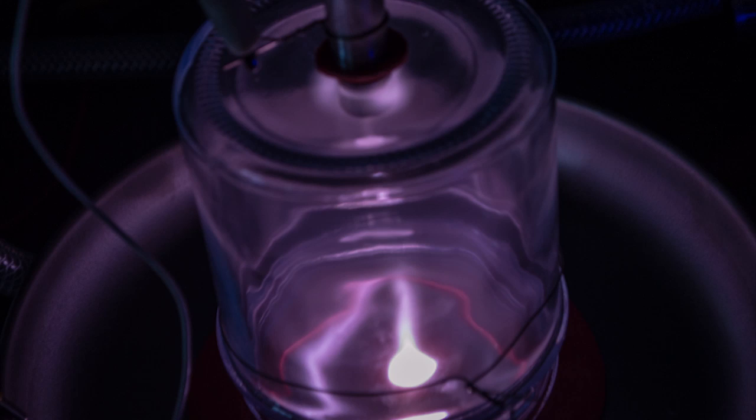While it may look like an Iron Man repulsor, this cool device is actually at the heart of many manufacturing processes that make the modern world what it is. It's called a DC sputtering magnetron, or sometimes just a sputter coater.